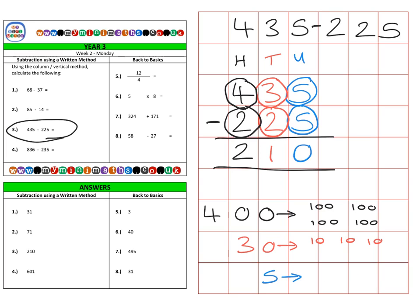Then we take away the 20, which is two tens — one, two. And finally, we take away the two hundreds. That leaves us with 200, 10, and nothing, giving a final answer of 210.